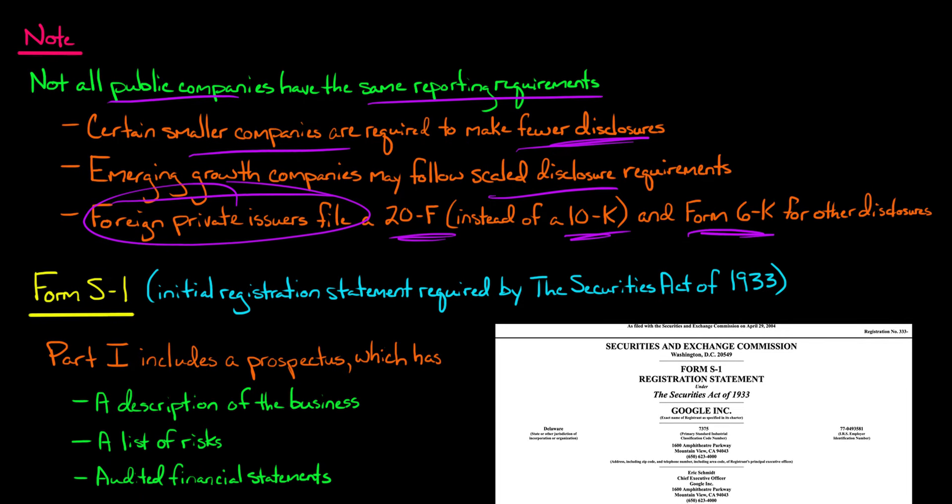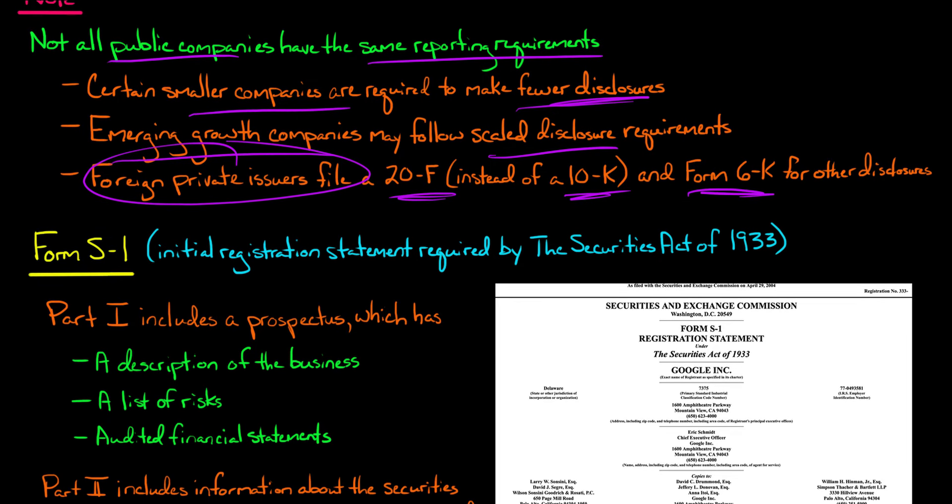So not all public companies are filing the exact same reports, but I'm going to go through the ones you're more likely to hear about, the more common ones. Now, Form S-1, as I noted before, this is the initial registration statement required by the Securities Act of 1933. If you hear that there's a company that's going to do an IPO, you will see that they will file this Form S-1.